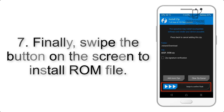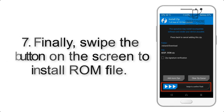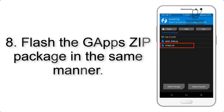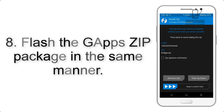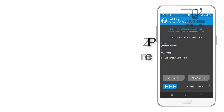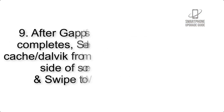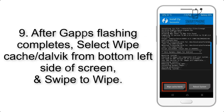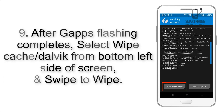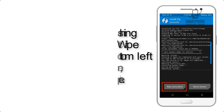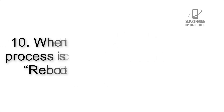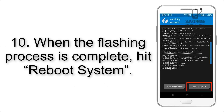Step 6: Navigate to the storage and select the ROM zip file. Step 7: Swipe the button on the screen to install the ROM file. Step 8: Flash the GApps zip package in the same manner.